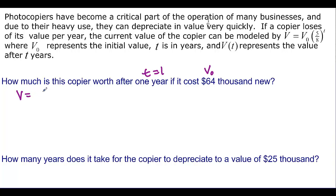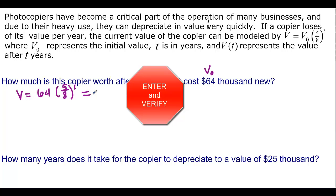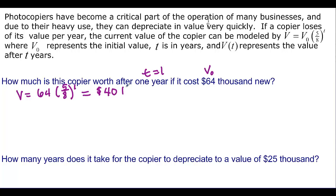We want to know the value. If we have 64 to start out with, we take our 5 eighths base, and we raise it to the first. And if you take that to your calculator, which I would like for you to do at this moment, then you get 40 or $40,000. That's how much it's worth after one year.